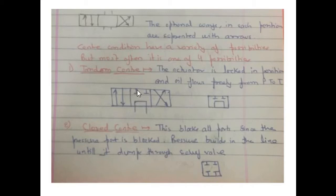And the actuator, whatever it is, it may be a ram or the vanes of a steering gear, it will be locked in the same position. Number two is closed center. This blocks all the ports. Since the pressure port is blocked, pressure builds in the line until it dumps through the relief valve.